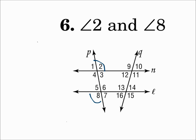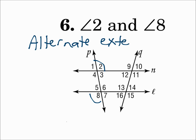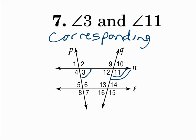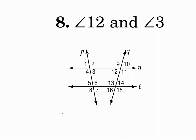Number 6: angle 2 and angle 8 — those are on transversal P, and they're outside the two lines on opposite corners. That's alternate exterior. Number 7: angle 3 and angle 11 — those are on transversal N, and they're each in the bottom right position. When they're in the same position, they're corresponding angles. Number 8: angle 12 and angle 3 — those are on transversal P, in between the two lines and on the same side of the transversal. That's consecutive interior angles.